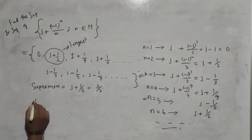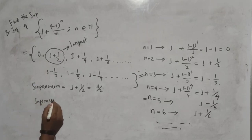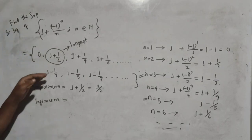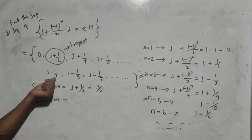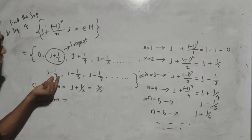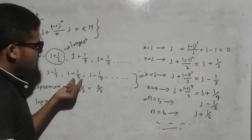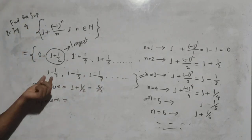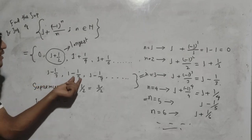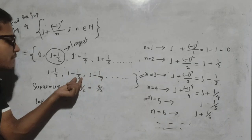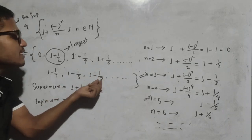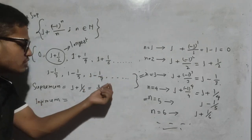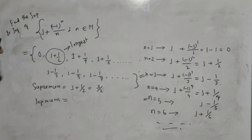Now we have to find the infimum. Look at the odd-indexed terms: 1 minus 1/3, 1 minus 1/5, 1 minus 1/7. Now notice: 1/3 is greater than 1/5, 1/5 is greater than 1/7, and 1/7 is greater than 1/9. So the odd-indexed terms are increasing as n increases.